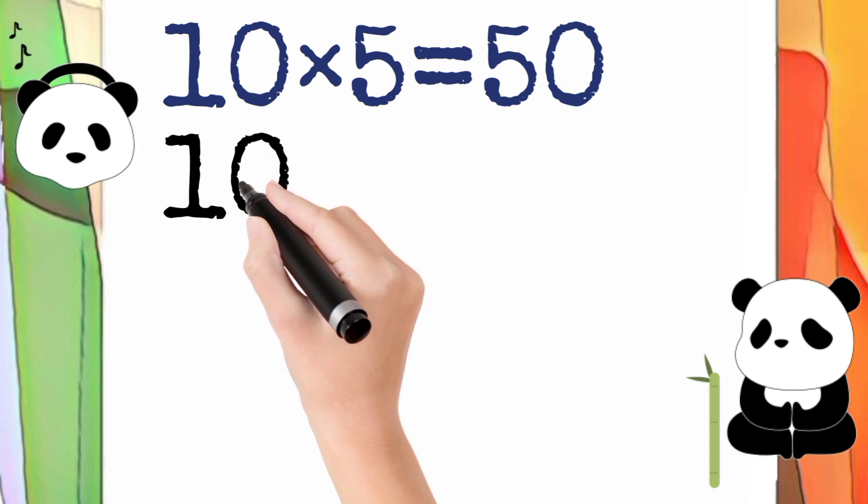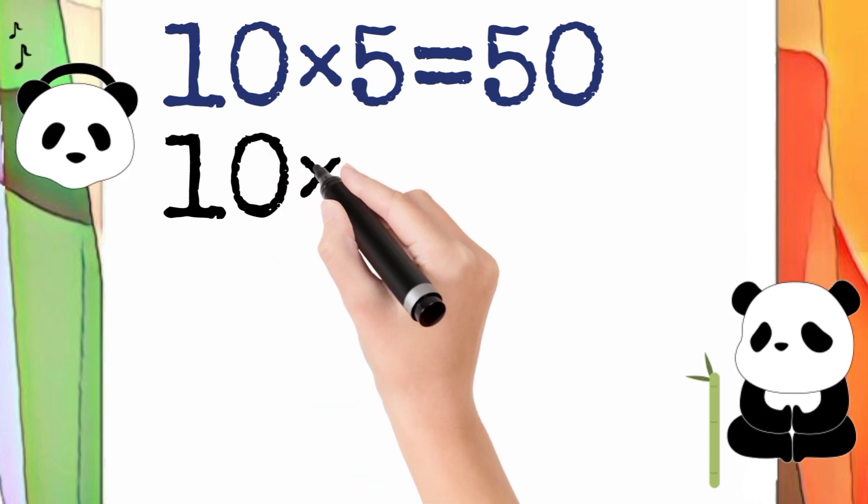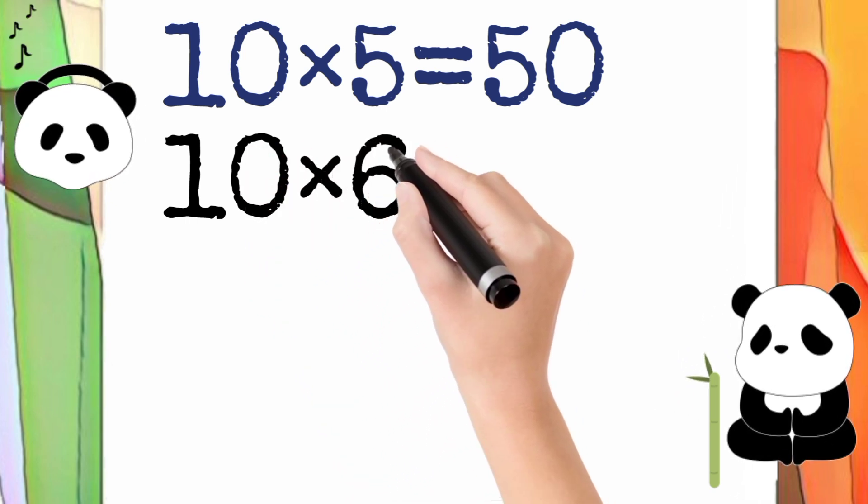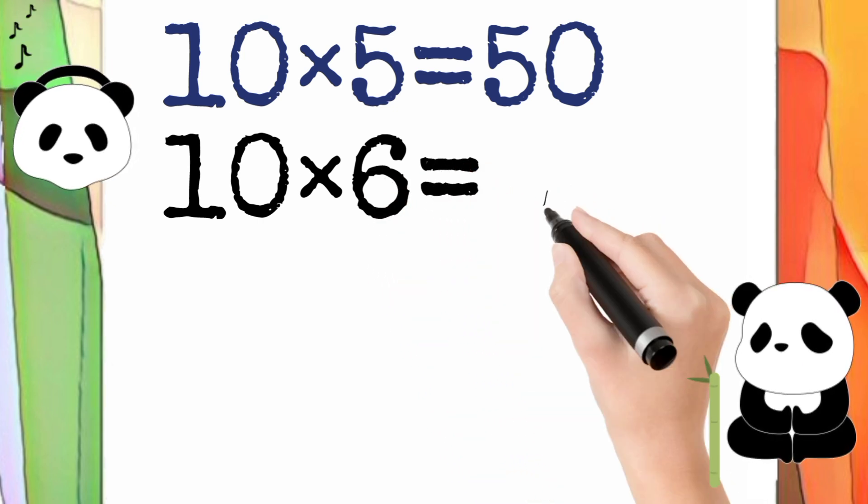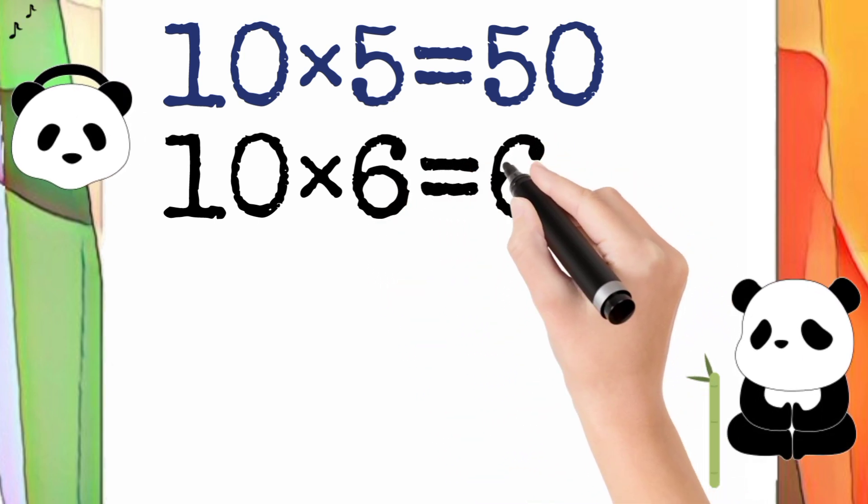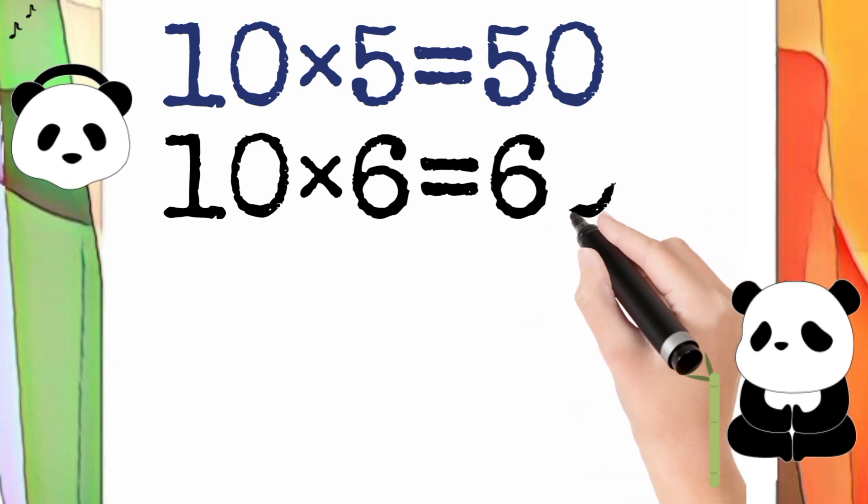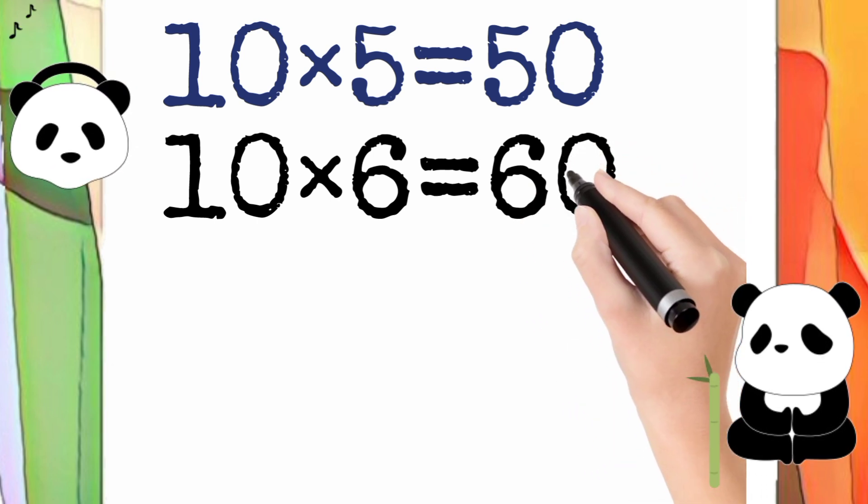10 multiply by 6 is equal to 60. So 10 times 6 equals 60.